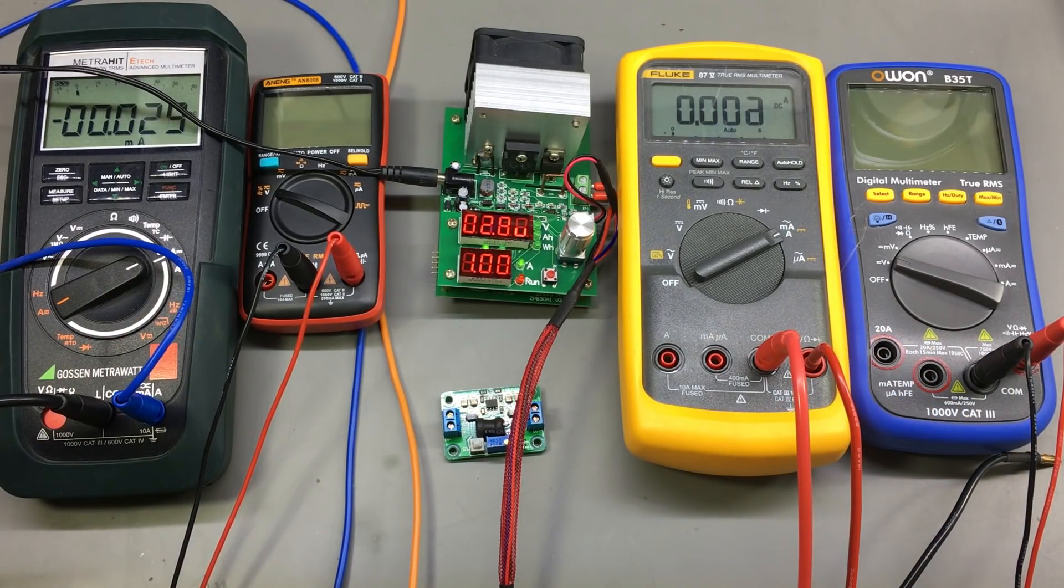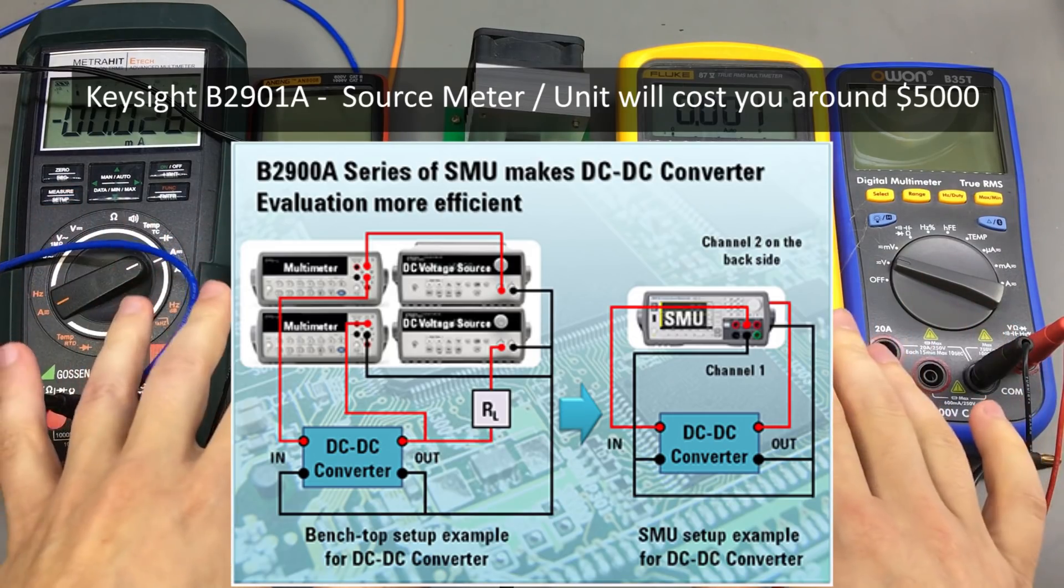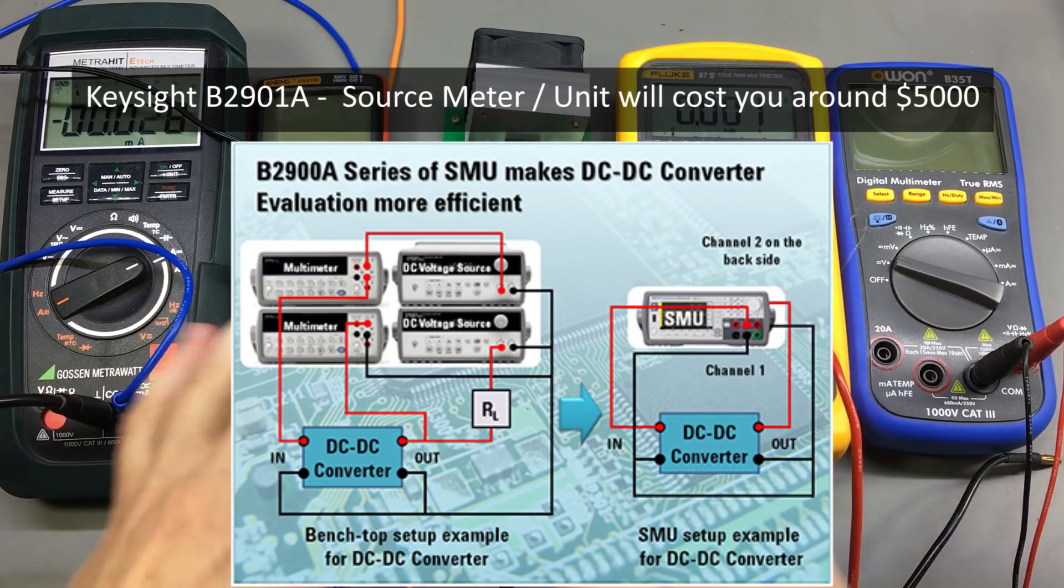Although in a professional environment you could automate this setup and the software would control the instruments for changing the parameters and recording the measurements in an automated fashion. If you own fancy equipment like a source measure unit, that one instrument can do all the measurements and data log the results, but a source measure unit is way out of our budget, so we will be using individual multimeters for this test.